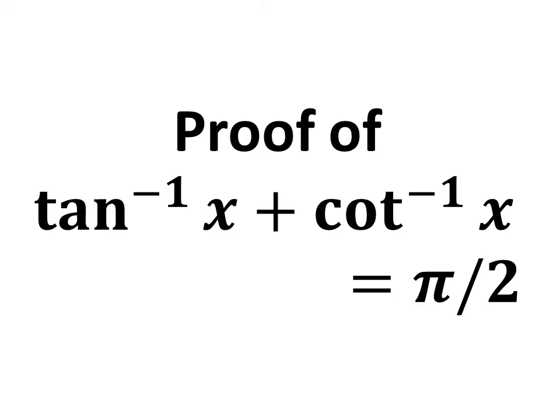In this video, we will learn how to prove the trigonometry identity: inverse tangent of x plus inverse cotangent of x equals π/2. It can also be stated as arctan(x) plus arccot(x) equals π/2, as inverse tangent is also known as arctangent and inverse cotangent is also known as arccotangent.